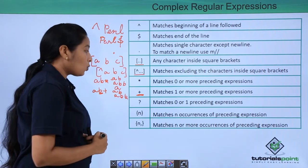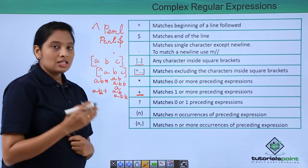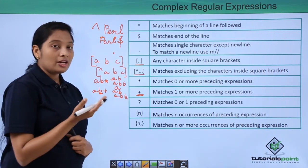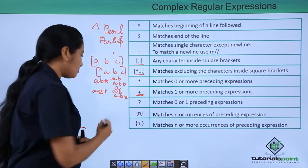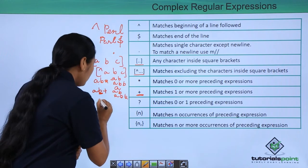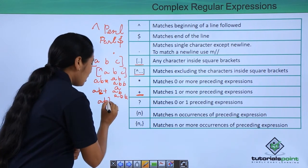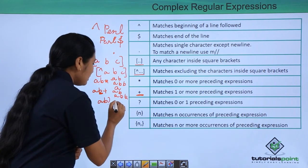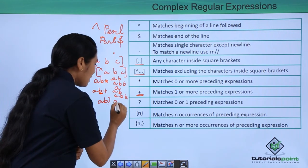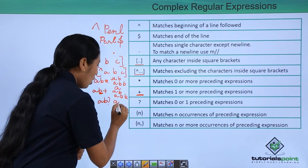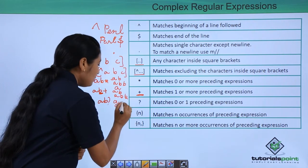Next is the question mark, which means zero or one of the preceding expression. If you have A B?, then it matches A or AB.